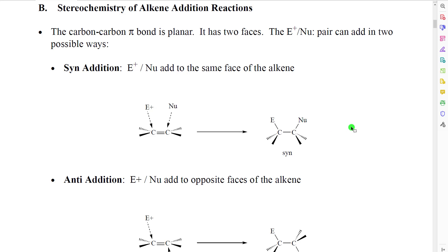These addition reactions also have a rather complex stereochemistry. There are a couple possible ways in which the electrophile-nucleophile pair can add to the pi bond. If we look at a carbon-carbon pi bond, both of the carbons are trigonal planar, so the carbon-carbon pi bond itself is planar. It has what we call two faces. If we look at it from the side, there would be a face above the plane of the pi bond and all of its attached substituents, and there would be a face below.